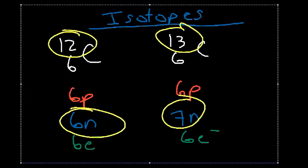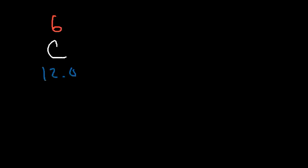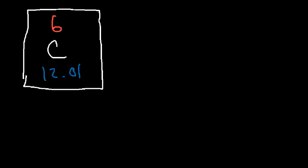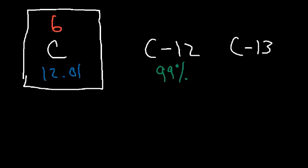If you look at carbon on the periodic table, below it you see 12.01 — not exactly 12. This number is the average atomic mass. It's not exactly 12 because carbon has multiple isotopes. The predominant isotope is carbon-12, but you also have carbon-13 and a very tiny amount of carbon-14. Approximately 99% of carbon atoms in a sample are carbon-12, and the other 1% is carbon-13. The amount of carbon-14 is insignificant.